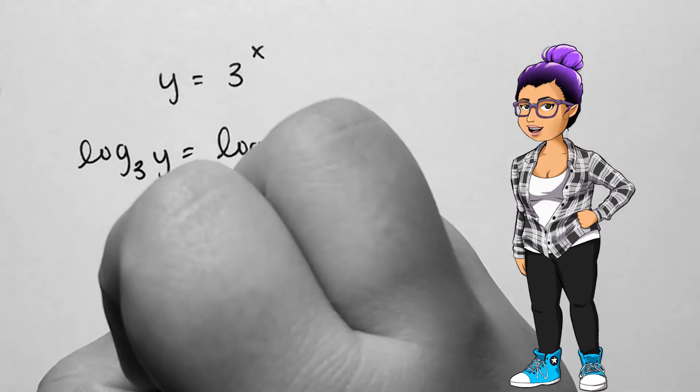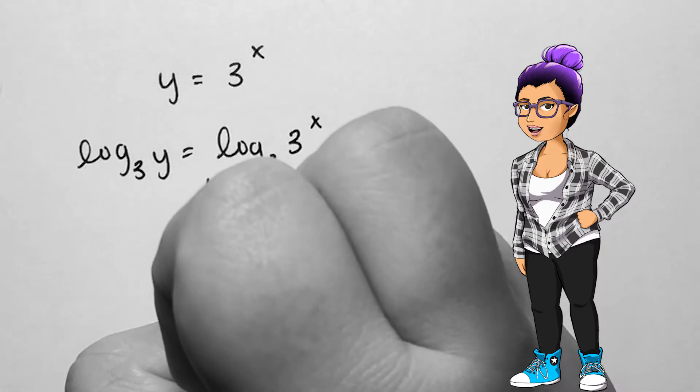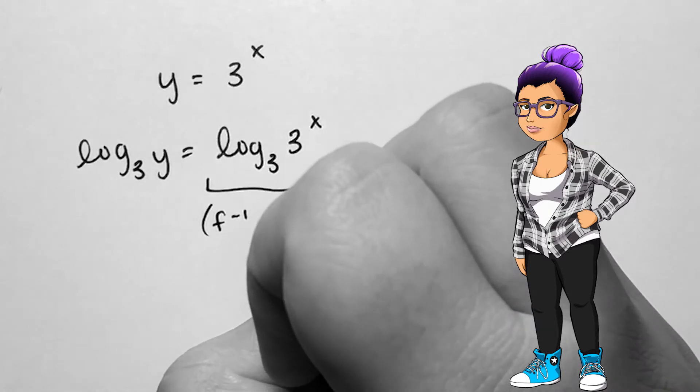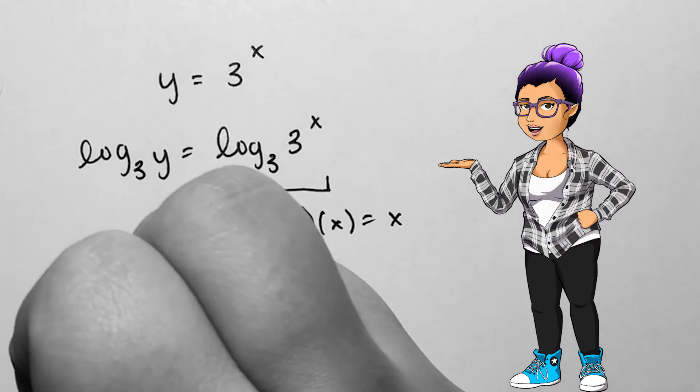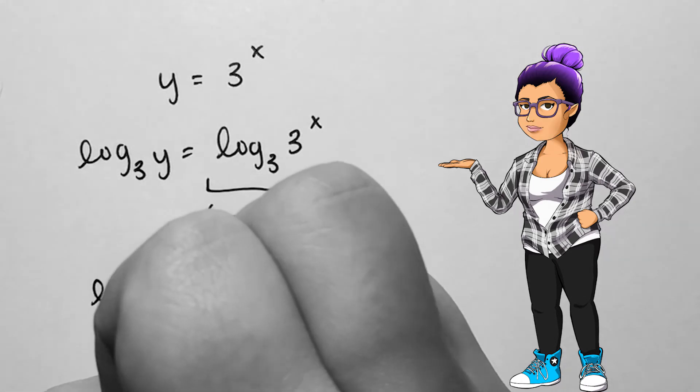Since logs and exponents of matching bases are inverses of each other, and a function composed with its inverse cancels out to leave what's on the inside, we'll have x left over on the right side of the equation. The left will remain log base 3 of y.